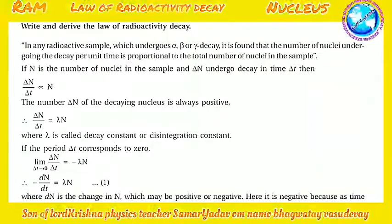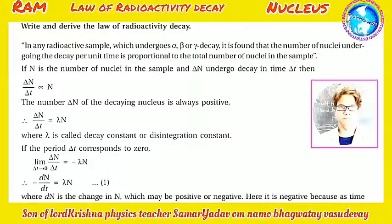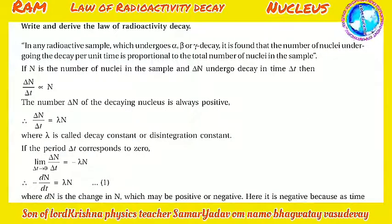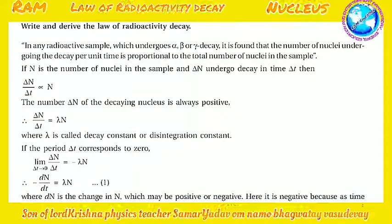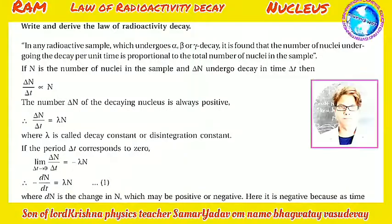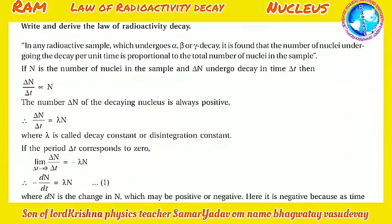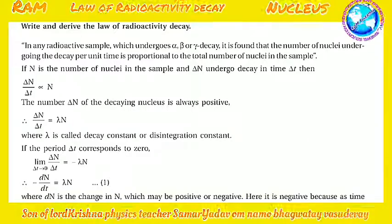Write and derive the law of radioactive decay. In any radioactive sample undergoing alpha, beta, and gamma decay, the number of nuclei decaying per unit time is proportional to the total number of nuclei in the sample. If N is the number of nuclei and ΔN nuclei decay in time ΔT, then ΔN/ΔT ∝ N, giving ΔN/ΔT = −λN, where λ is called the decay constant or disintegration constant.